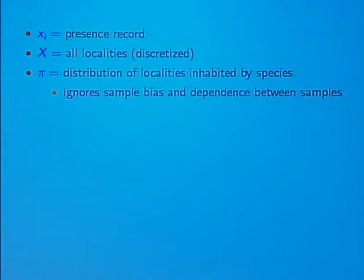In setting things up this way, we're making a lot of assumptions. We're ignoring sample bias — the bias from biologists tending to look in certain areas more than others. And we're ignoring dependence between the samples, such as the fact that if you find a species here you might wander over and find another one close by. We're ignoring that for the sake of tractability.